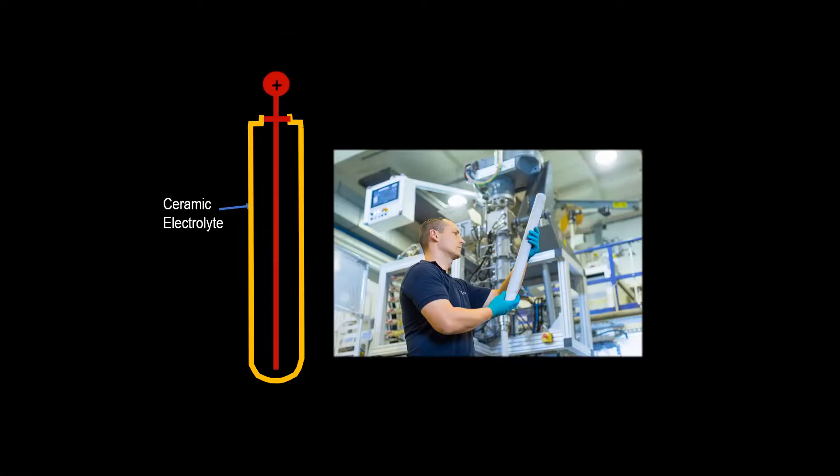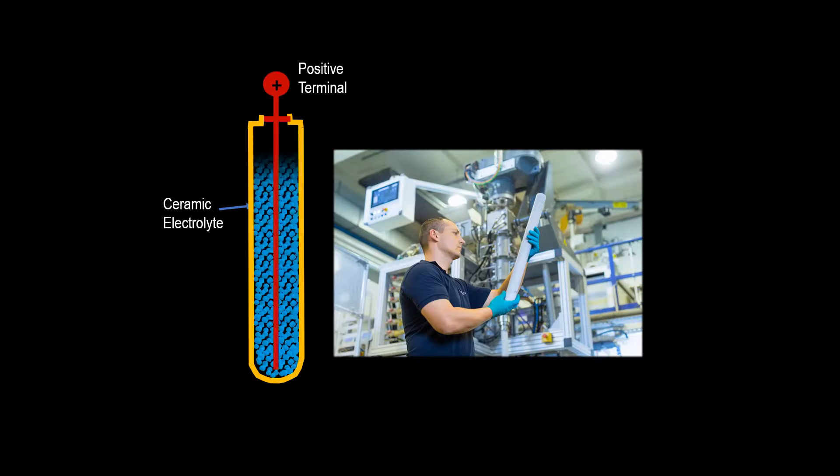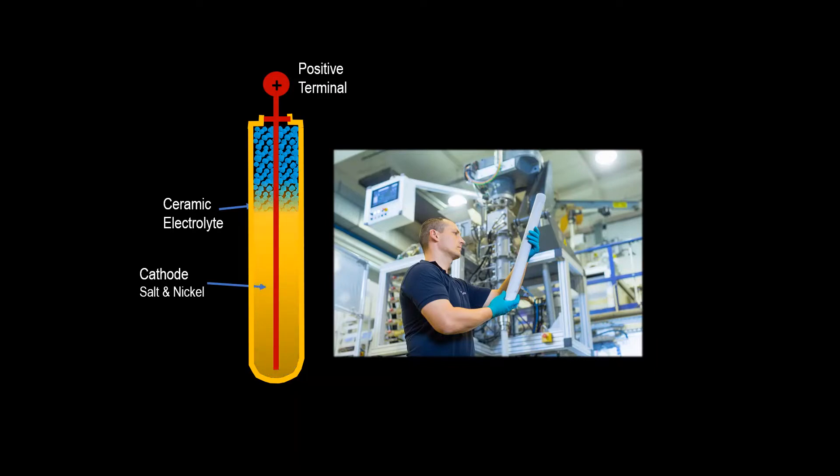A serenergy battery consists of a ceramic tube with a central positive terminal. The tube is filled with nickel cathode granules and simple table salt before being flooded with sodium alumina chloride medium.